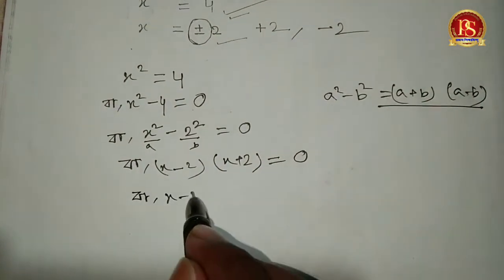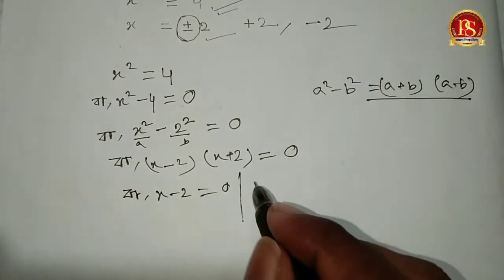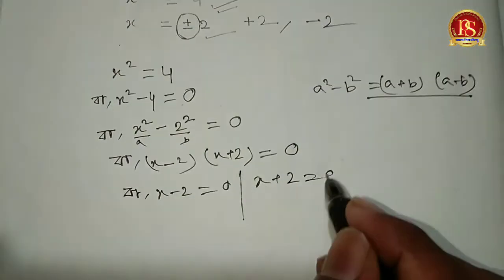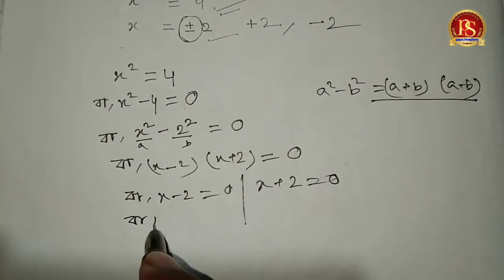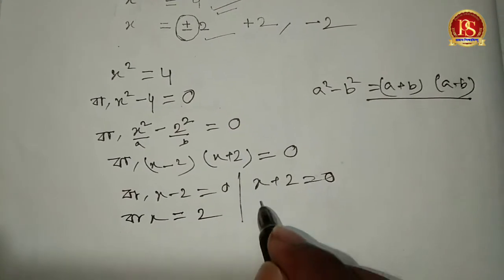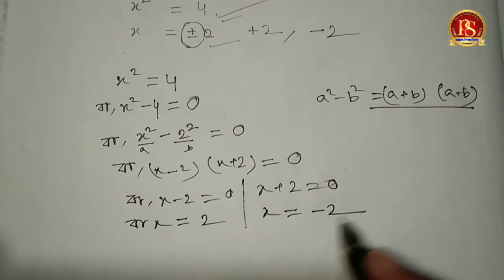From x - 2 = 0, we get x = 2. From x + 2 = 0, we get x = -2. So our solutions are x = 2 and x = -2.